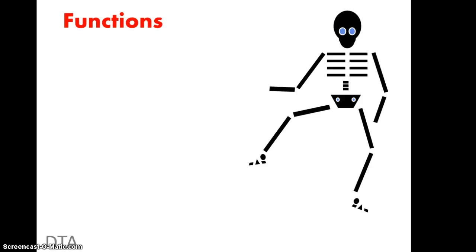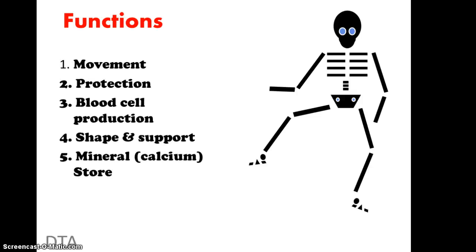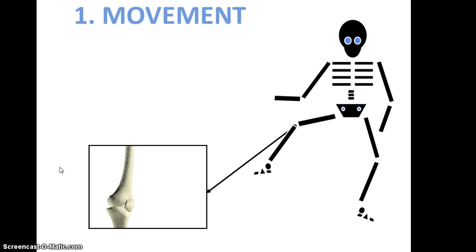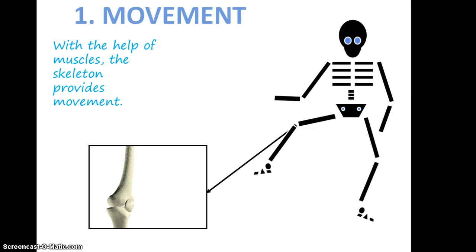There are five functions of the skeleton: principally movement, protection, blood cell production, shape and support, and mineral storage. We'll look at each one of these in a little bit more detail but relatively quickly.